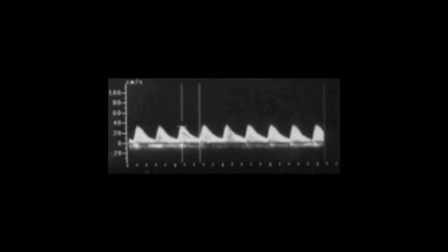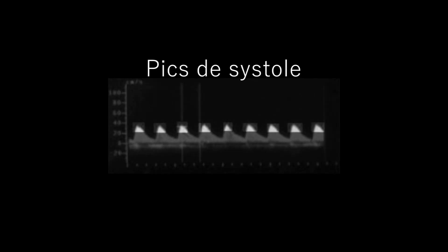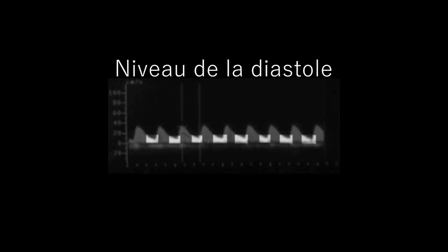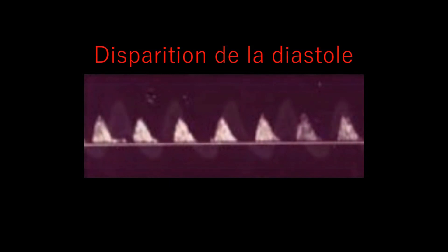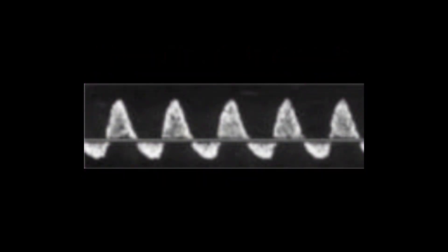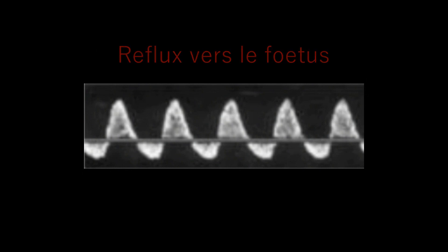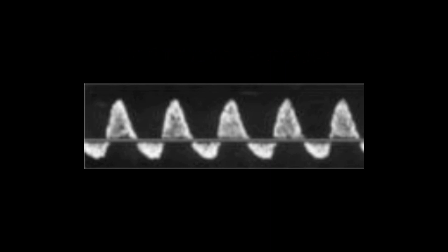Voici un Doppler normal d'une artère ombilicale. On reconnaît bien le pic de la systole et le niveau de la diastole. Voici en comparaison celui d'une situation pathologique : le pic de la systole persiste, mais on observe une disparition de la diastole. Dans les cas extrêmes, quand le sang est poussé vers le placenta par la systole de l'enfant, il peut refluer vers le fœtus par l'artère ombilicale au cours de la diastole, car le placenta présente trop de résistance. C'est le reverse flow.